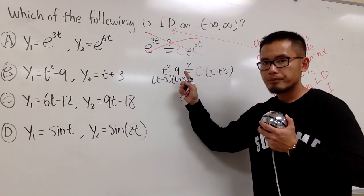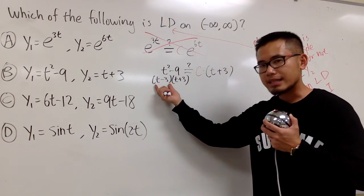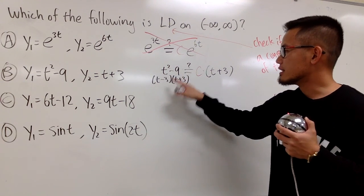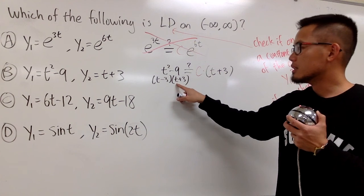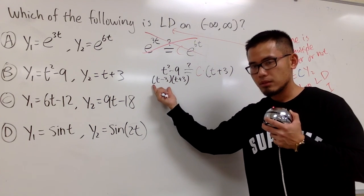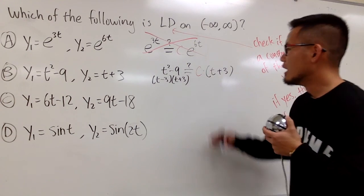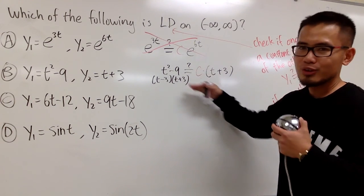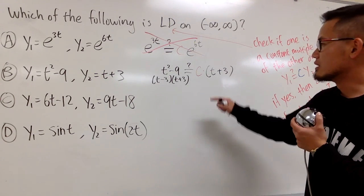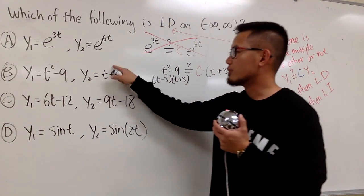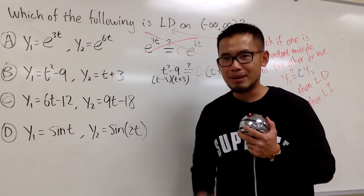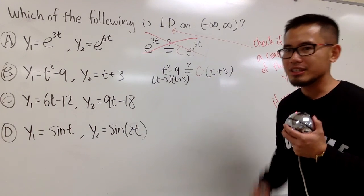But, this right here, this is not constant multiple. I cannot make c to be a function, right? Yes, this is the same as t minus 3 times t plus 3. But, this right here, it's not constant. Therefore, in fact, I cannot choose a number to make this true neither. And another way to see it real quick is that, you see this is t to the first power, and this is t to the second power. You can suspect they are linearly independent. And they are linearly independent,